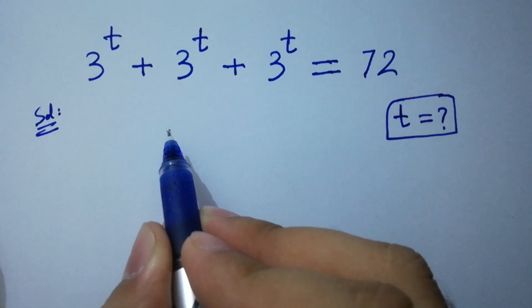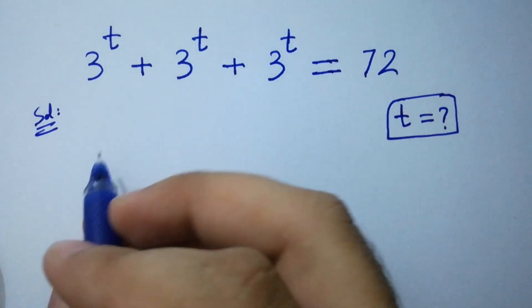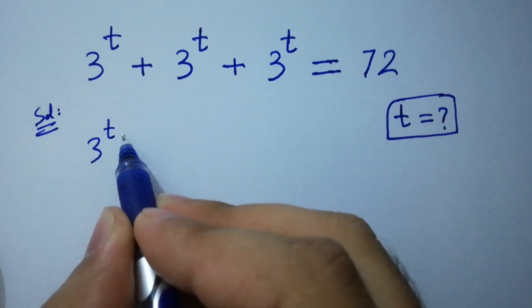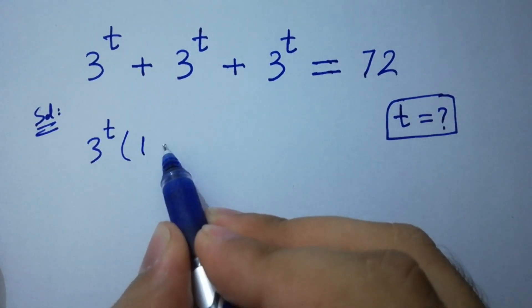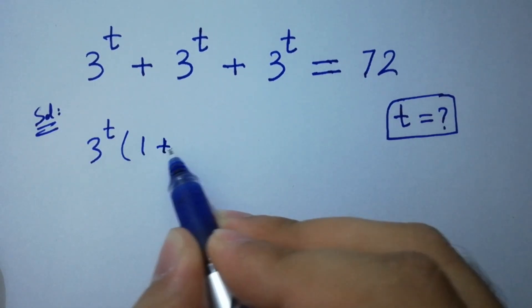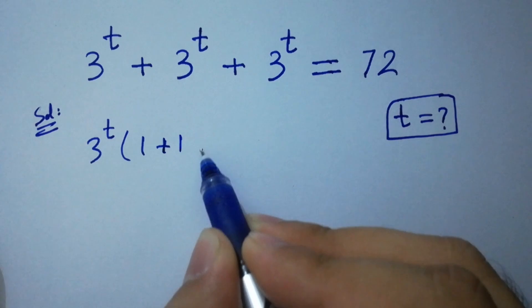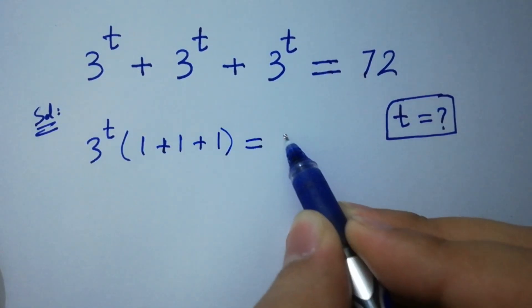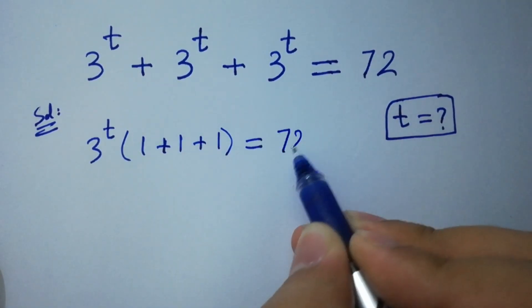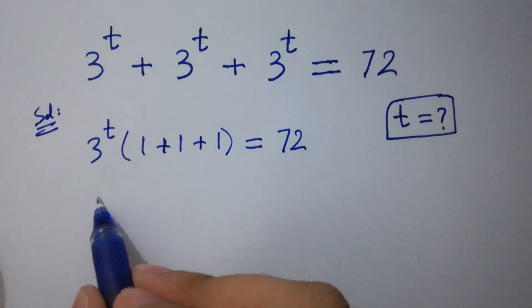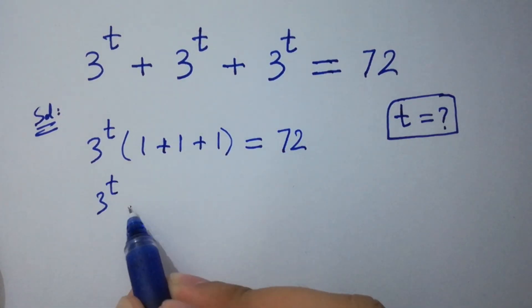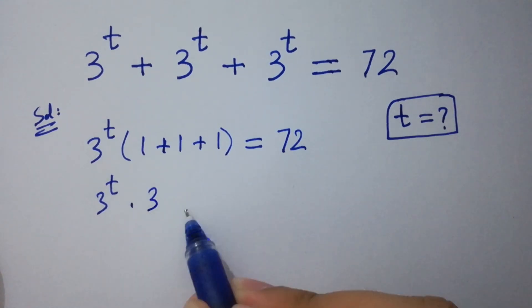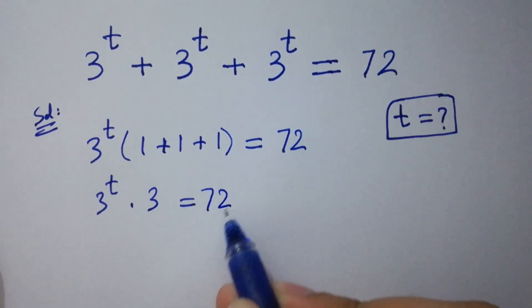On the left side, 3 to the power t can be common. We have 1 plus 1 plus 1 equal to 72 as it is. So 3 to the power t times 3 equals 72.